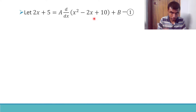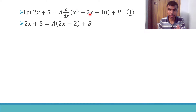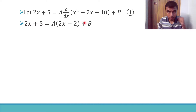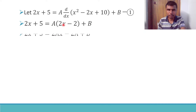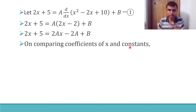Now, 2x + 5 — let's compute the derivative of (x² - 2x + 10). The derivative of x² is 2x, the derivative of -2x is -2, and the derivative of the constant 10 is 0. So the derivative is (2x - 2). Multiplying by A gives 2Ax - 2A, and then we add B. Now we compare coefficients of x and the constant terms.